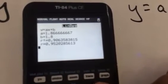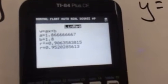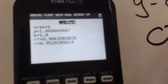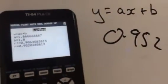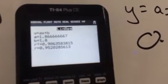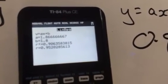And we can see our line regression r is 0.952. And the line regression has an a value of 0.186 recurring and a b value of 1.8.